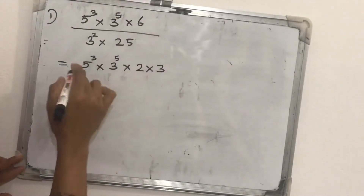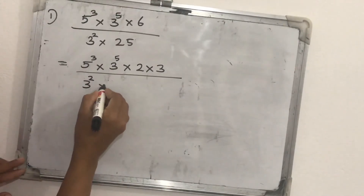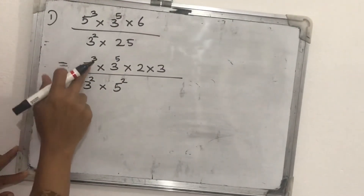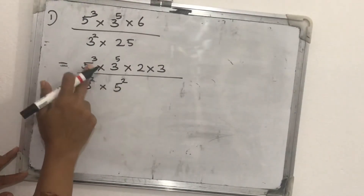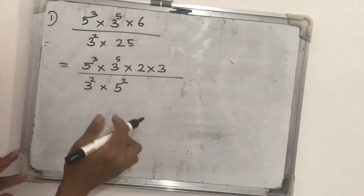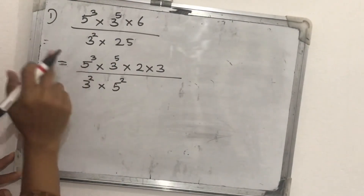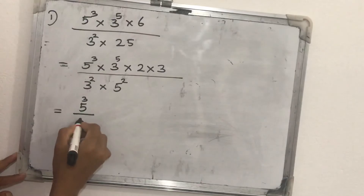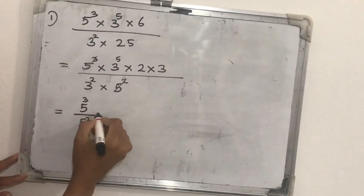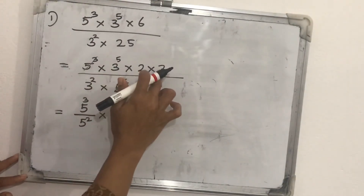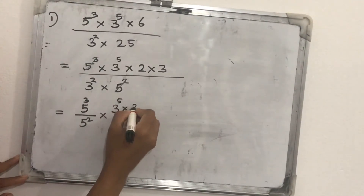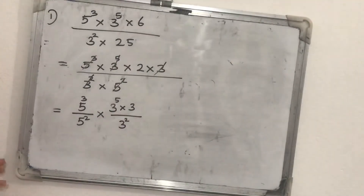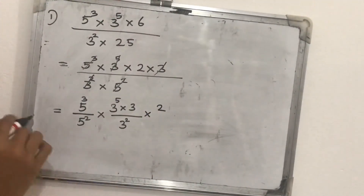So we rearrange: five cubed, divided by five squared, into three raised to five, times three from the six, divided by three squared, and the remaining two stands alone. We write six as two into three because three is already a base in our expression. Converting to the same base lets us apply the exponent laws. After rearranging, only the number two remains as a separate factor.